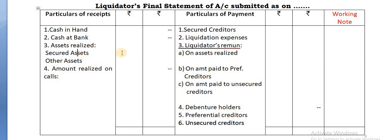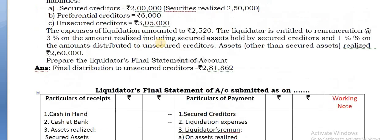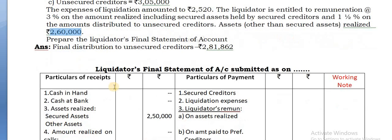First, secured assets - the secured assets are realized at 2,50,000. And then other assets are realizing at 2,60,000.